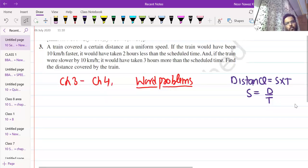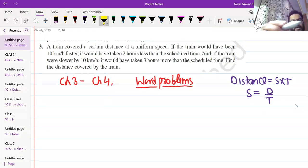There is a small formula: distance is equal to speed into time, or speed is equal to distance divided by time. What happens in these questions? A train covered a certain distance. We don't know the distance, it's a certain distance.